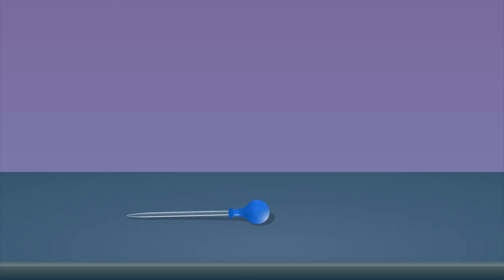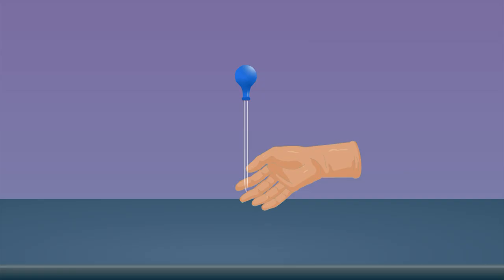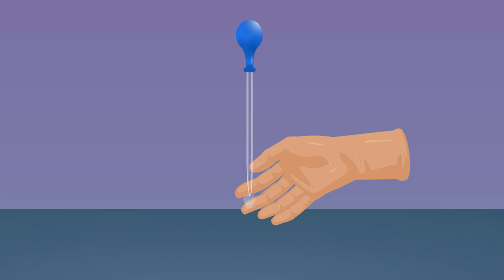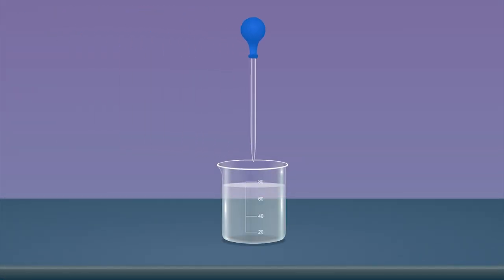Procedure: Take a rubber dropper. Press the rubber bulb of the dropper by keeping its nozzle on your fingertip. We can feel some air coming out of it. Immerse this nozzle half into the water in the beaker and press the bulb.